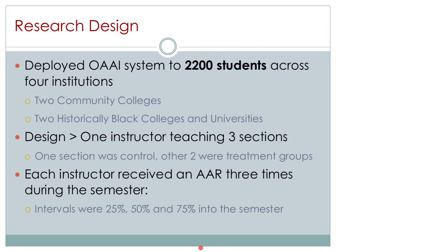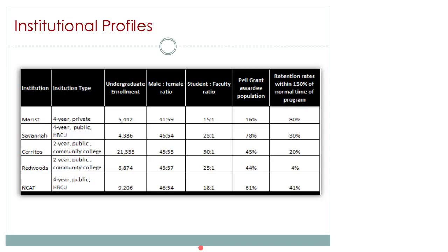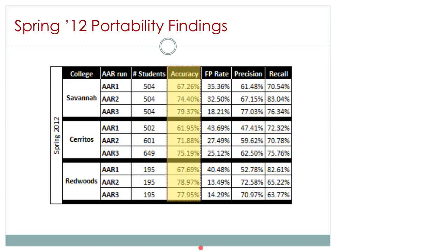These are some of the results we found in terms of accuracy of our predictive model. This was a model built at Marist College using our student population data, and you can see how accurate it was when used at the other institutions. This was quite surprising — we thought the accuracy would be in the 35% to 40% range. We were quite intrigued to find the model performed much higher than we were anticipating. We replicated the study in fall 2012 and found very similar findings, suggesting this wasn't a random occurrence — the model seemed to be much more portable than we had assumed.